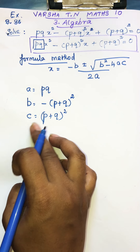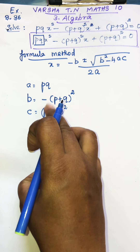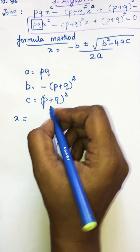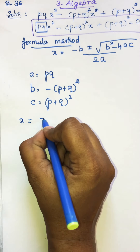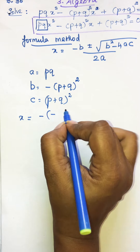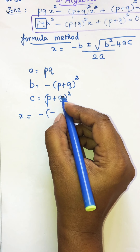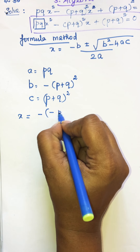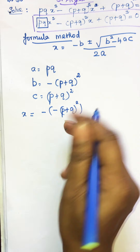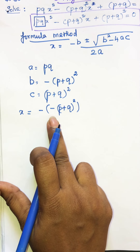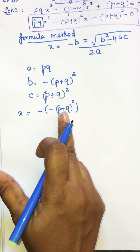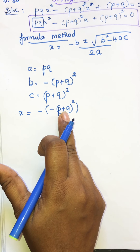Now we are going to substitute the a, b, and c values into the formula. So x equals minus of b — here b has a minus sign already, but just write down that minus. So we have: minus of minus (p plus q)².